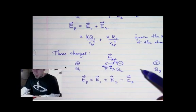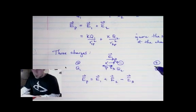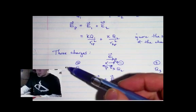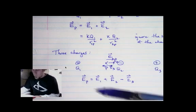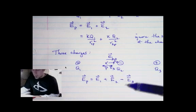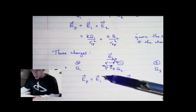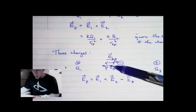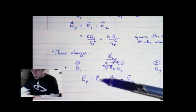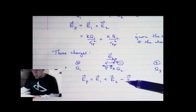This is the straight in-line orientation. The process is the same regardless of where point P is — between charges or outside. I ignore the sign of the charges when finding the magnitude, consider the direction each field points, and use that direction to assign the sign to each field in the sum.